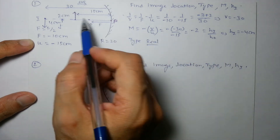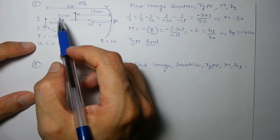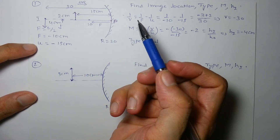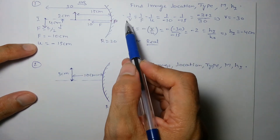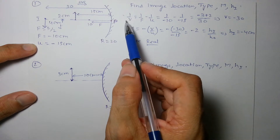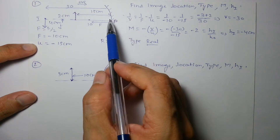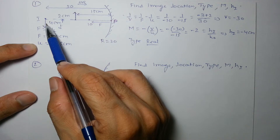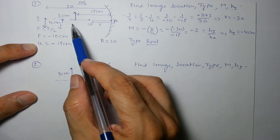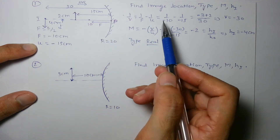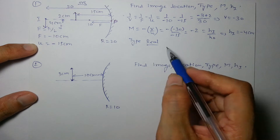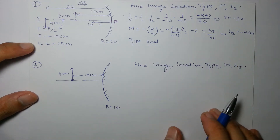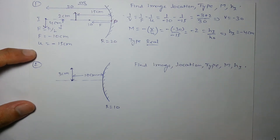If the image forms in front of the mirror, it is real. If it forms behind the mirror, it is virtual. So the image type here is real, hᵢ = 4 cm but below the principal axis.